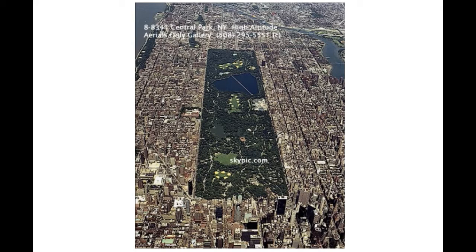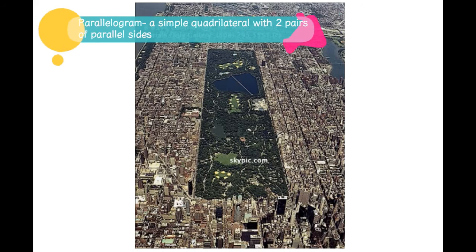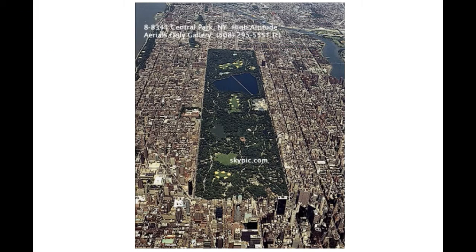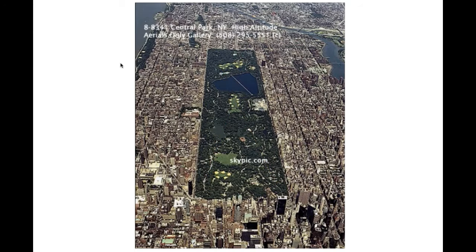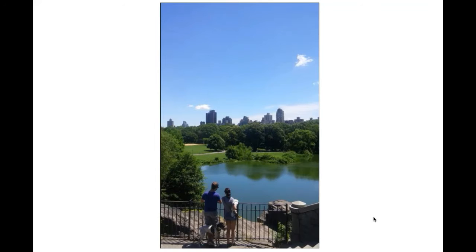Here's what Central Park looks like from a little higher up in the air. As you can see, it's a parallelogram, meaning that it has two pairs of parallel sides. The parallel sides are opposite of each other and are the same length. The opposite angles inside, meaning the inside corners, are the same measure. This corner is the same measure as that corner, and this corner is the same measure as that corner.